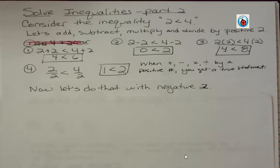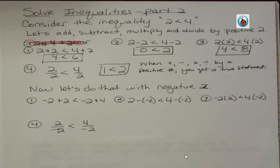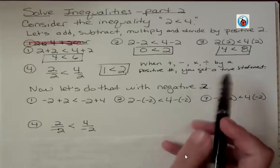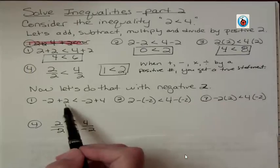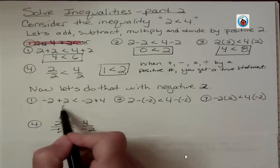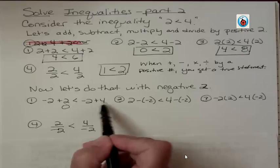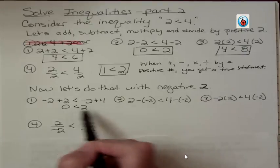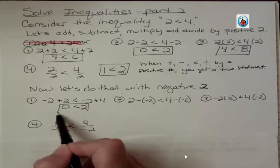But now let's do that with negative 2. Same thing with negative 2. So now we have 2 plus negative 2, which is 0, and 4 plus negative 2, which is 2. Well, that's still true. 0 is less than 2. That's good.